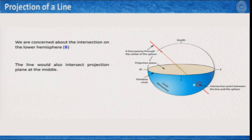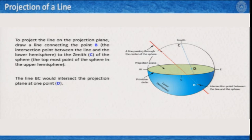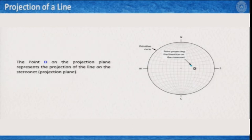Point B — which is actually the line — would also intersect at a point on the projection plane. To project this line onto the primitive circle, you draw a line connecting the zenith of the sphere (point C) and point B. While doing so, this line from B to C also passes through the projection plane and gives a point D. This point D is the projection of the line on the stereonet.